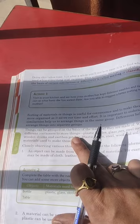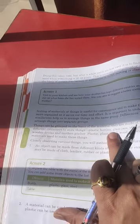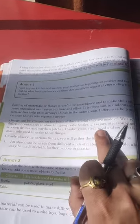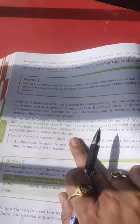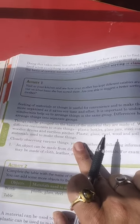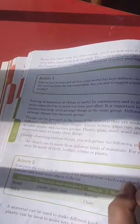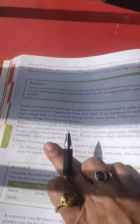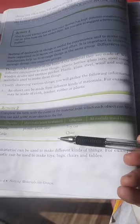For example, write: 'We use different containers to store things, for example: plastic bottles, glass jars, steel containers, wooden drums, earthen, pitcher. Plastic, glass, steel, wood, and soil are the materials used to make these things.' You have an activity here you have to do it - sorting of materials.